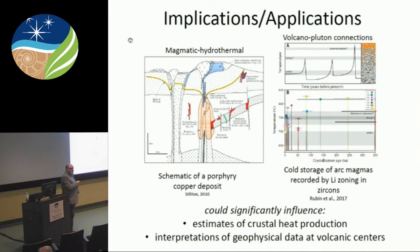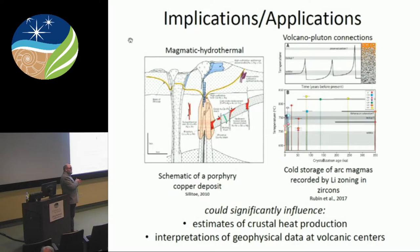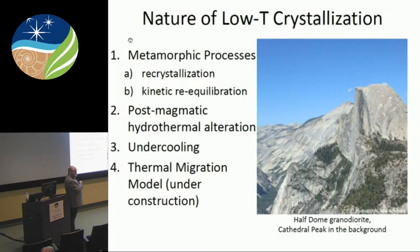There are a lot of implications for this, including the relationship between magmatic and hydrothermal systems and ore deposits. Recently, Ruben et al. from UC Davis did modeling of lithium zoning in zircon crystals from an arc magma and showed these rocks crystallized the majority of their time at really low temperatures — a good way to link the crustal roots of magmatic systems to their surface expressions as volcanoes and plutons. I'm going to go through possible reasons for these low temperatures and end with the thermal migration model — for those of you here during Craig Lundstrom's talk a couple months ago, this is his model, and he would agree it's under construction.